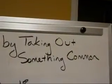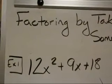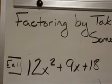This is an example of factoring by taking out something common. Look at our first example and the polynomial 12x squared plus 9x plus 18.